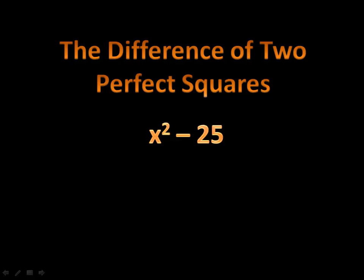Notice in this case, x squared is a perfect square. It's x times x. 25 is also a perfect square. It's 5 times 5.